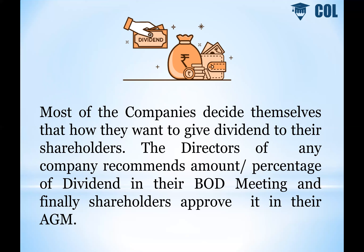Other than that, every company can take a decision about the dividend policy through their board of directors and approve it in the AGM. Most companies decide themselves how they want to give dividends to their shareholders. The directors of any company recommend the amount or percentage of dividend in their board meeting, and listed companies finally approve it in the AGM. If the board has declared a dividend, then they can approve the AGM.